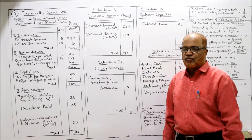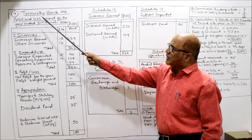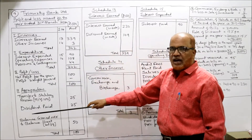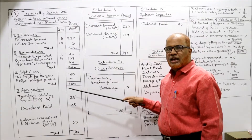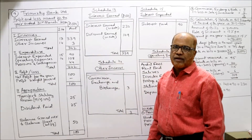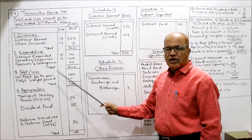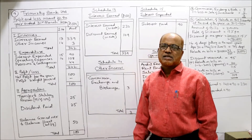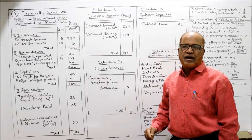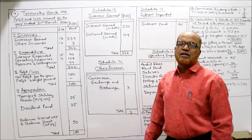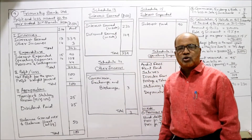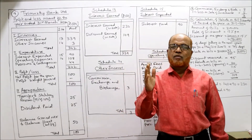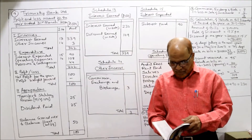We have to make the profit and loss account of Three Moorthy Bank Limited for the year ended 31st March 2004. I have prepared the same format — draw the format completely up to transfer to statutory reserve, which is 25% of whatever profit we get. Make blank schedules 13, 14, 15, and 16. If there are no adjustments, directly take items in the schedule. If there are adjustments, make a working note. One compulsory working note is provisions and contingencies, covering bad debts, provision for doubtful debts, and provision for taxation.